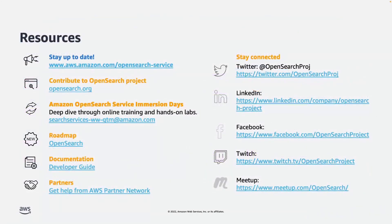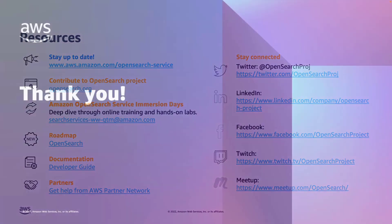If you want to learn more about Amazon OpenSearch Service, look at the product documentation. OpenSearch.org is the OpenSearch community where you can also contribute. We also have Amazon OpenSearch Immersion Days where we talk about what Amazon OpenSearch is and how it works, and you can get hands-on with labs to learn more about building operational analytics and observability data flows. You can also see the roadmap on GitHub and follow social media links on Twitter, LinkedIn, and Facebook to get regular updates about OpenSearch and Amazon OpenSearch Service. Thank you.